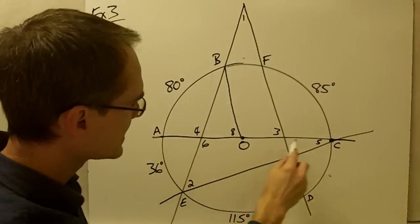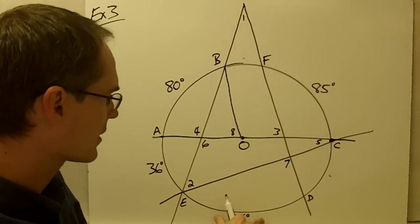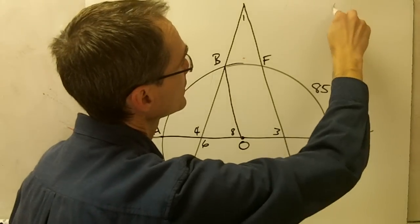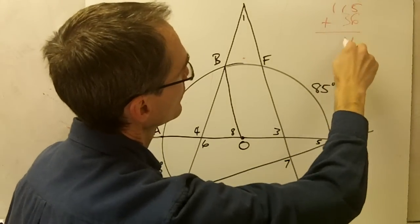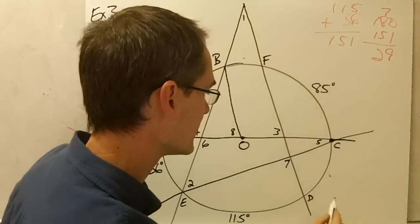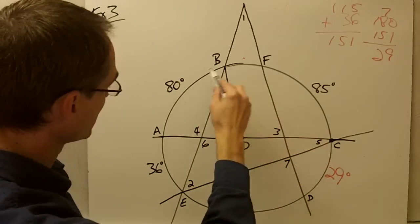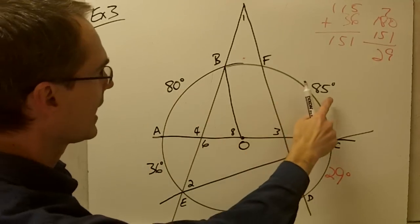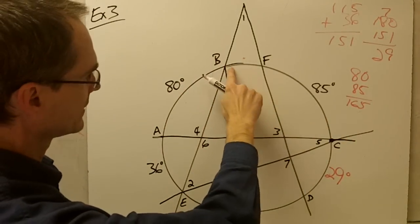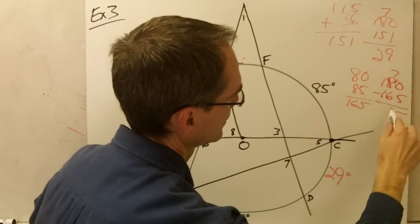AC is a diameter, so the bottom semicircle is 180 degrees. I know two of its arcs — 36 and 115 — so: 36 plus 115 is 151, and 180 minus 151 is 29. That arc measure is 29 degrees. For the other missing arc, that's the missing piece from the top semicircle: 80 plus 85 is 165, and 180 minus 165 is 15. So that arc measure is 15 degrees.